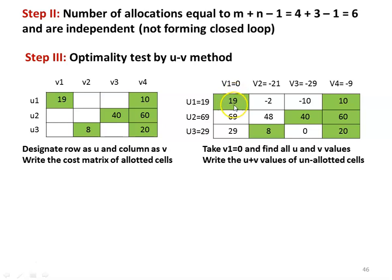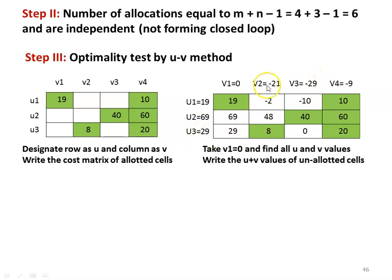With V1 equal to 0 and the allotted cell cost being 19, U1 becomes 19. Since cell C14 equals 10, V4 becomes minus 9. When V4 is minus 9 and cell C24 equals 60, U2 becomes 69 (since 69 minus 9 equals 60). When U2 equals 69 and C23 equals 40, V3 becomes 29 (since 69 minus 40 equals 29). Continuing, U3 and V2 are calculated using the allotted cell values to obtain all UV values.